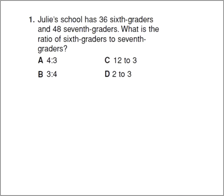Number one on our test review. We're looking at Julie's school has 36 sixth graders and 48 seventh graders. What's the ratio between sixth graders and seventh? So they want the sixth first, then the seventh.